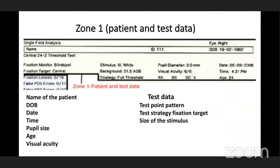In zone one, patient data includes name, date of birth, date, time, pupil size, age, and visual acuity. Age should be entered properly; otherwise it will not match with the normative data stored in the instrument. Pupil size should be normal but not too small — if it is less than 2 mm, there will be edge scotomas.